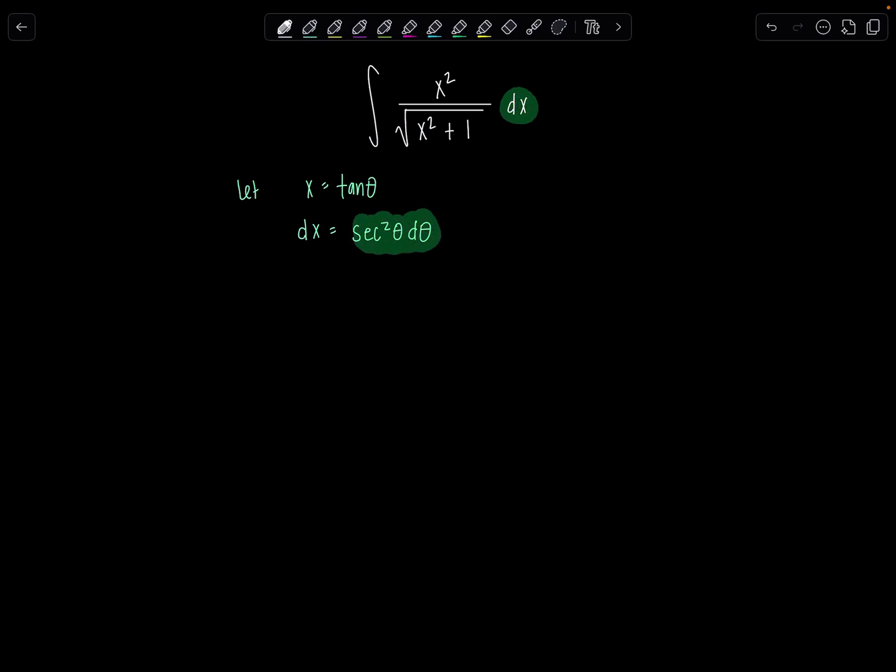So now let's rewrite our entire integral all in terms of theta. So instead of x squared in the numerator, I'll have tangent squared theta. The denominator becomes the square root of tangent squared theta plus 1. And then this dx right here is secant squared theta d theta.